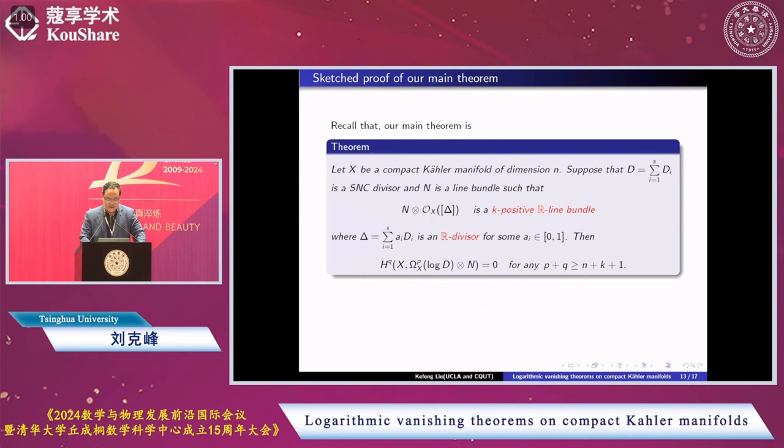Now let me give you a brief sketch of our argument, our proof. Remember, our main theorem is stated as follows: We consider a compact Kähler manifold and a simple normal crossing divisor, and also a line bundle N such that N tensor O_X(delta) as a real line bundle is k-positive, where delta is a real divisor with summation a_i D_i and a_i between 0 and 1.